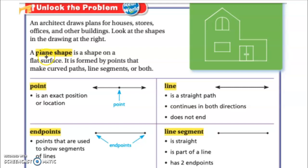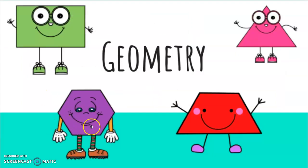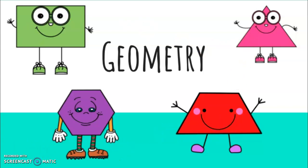We have a plane shape. A plane shape is a shape on a flat surface. It's formed by points that make curved paths, line segments, or both. Plane shapes are really just basically the normal shapes that we think about. We have a hexagon here, a rectangle, a triangle, a trapezoid. These are some examples of plane shapes.